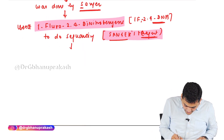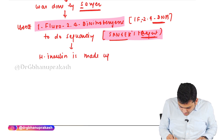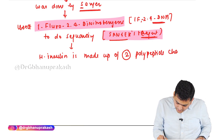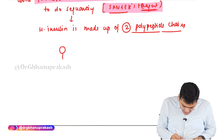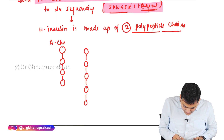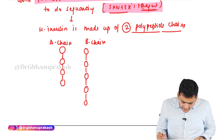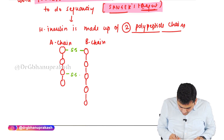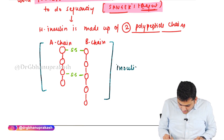Sanger found that human insulin is made up of two polypeptide chains, labeled A chain and B chain. These two chains are held together with the help of disulfide bonds, and this entire unit is referred to as insulin.